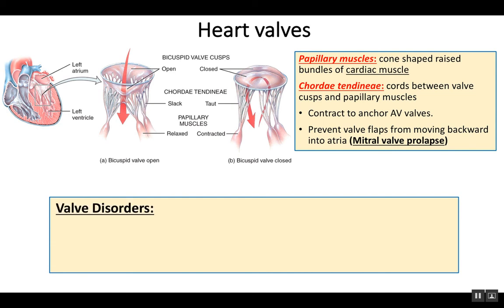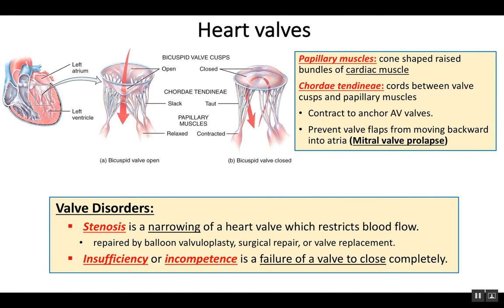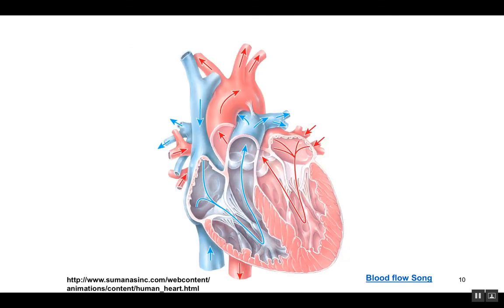Other things that can happen to valves include stenosis — when a valve is too narrow and restricts blood flow. You can repair that surgically, stretch the valve open with a balloon procedure called balloon valvuloplasty, or completely replace the valve. There's also a situation where valves are incompetent or insufficient, meaning they don't close all the way, which disrupts blood flow. Valve replacements are based on how severe the disorder or defect in the valve is. The next video will cover blood flow through the heart.